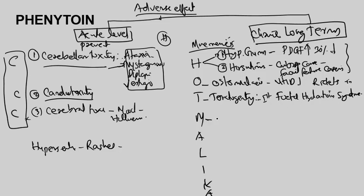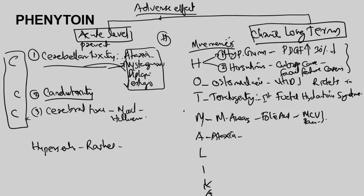M is for megaloblastic anemia — folic acid supplementation is required. There may also be raised mean corpuscular volume and pancytopenia. A is for ataxia, which is part of the cerebellar toxicity already mentioned.